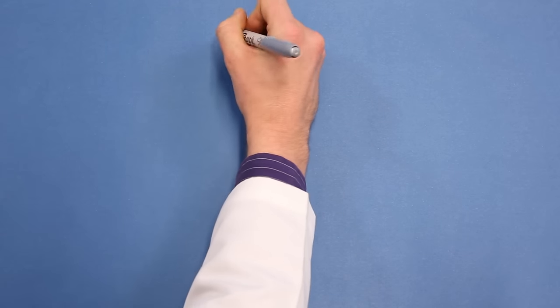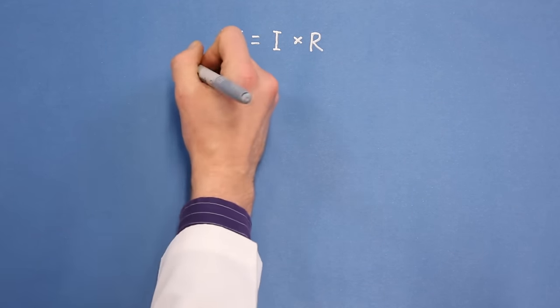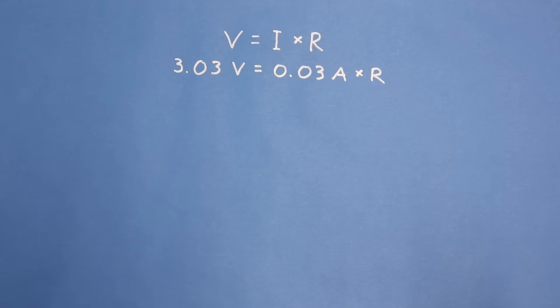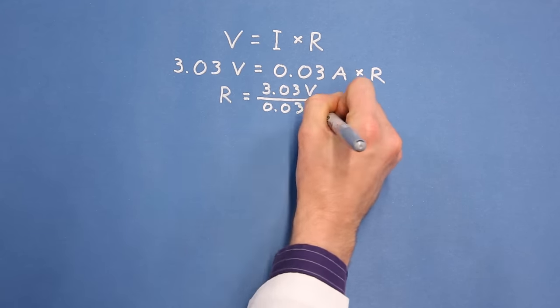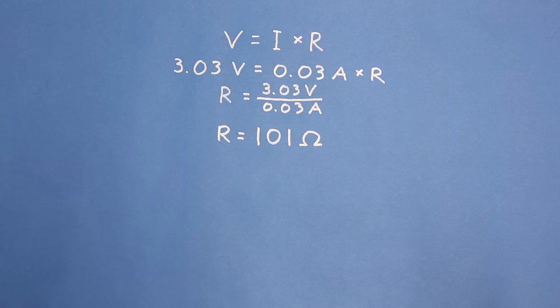Using Ohm's law, V equals I times R, we can plug in the values from our readings. So, 3 volts equals .03 amps times R. Using a little bit of algebra, we can calculate R. And we get R equals 101 ohms. Now that we've mathematically determined that we have a 101 ohm resistor, let's check our work.